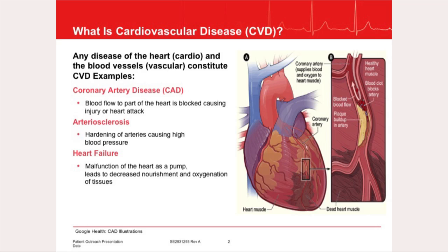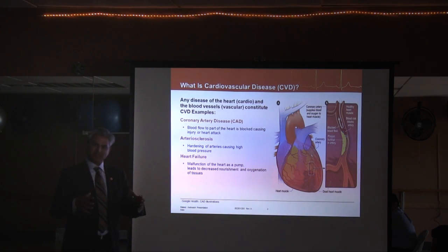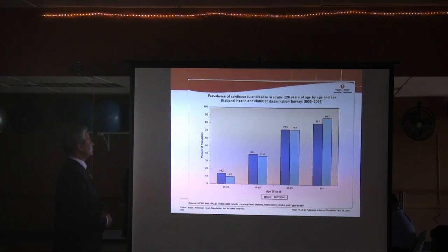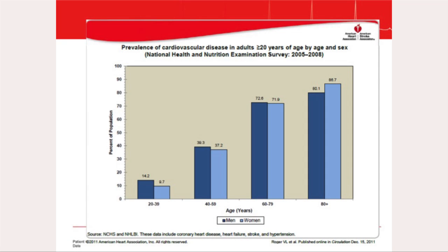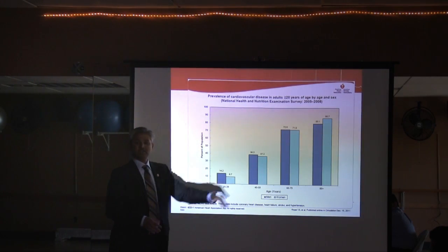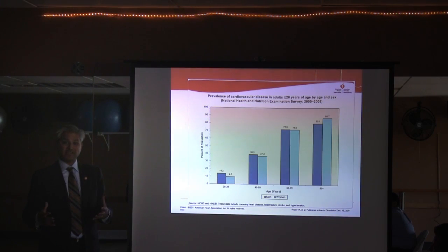Congestive heart failure is an outcome of blocked arteries and part of cardiovascular disease. Is this of concern? Looking at different age groups, from age 20 to 40, about 10 to 15 percent prevalence of cardiovascular disease is seen. Once you're in the 50 to 60 range, it jumps to about 40 percent, meaning 4 in 10 people in that age group have cardiovascular disease.